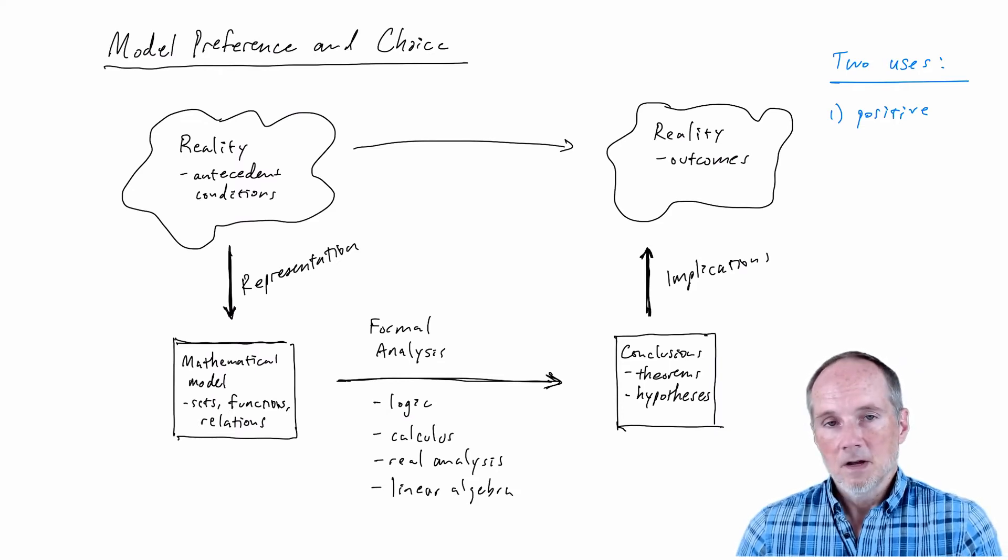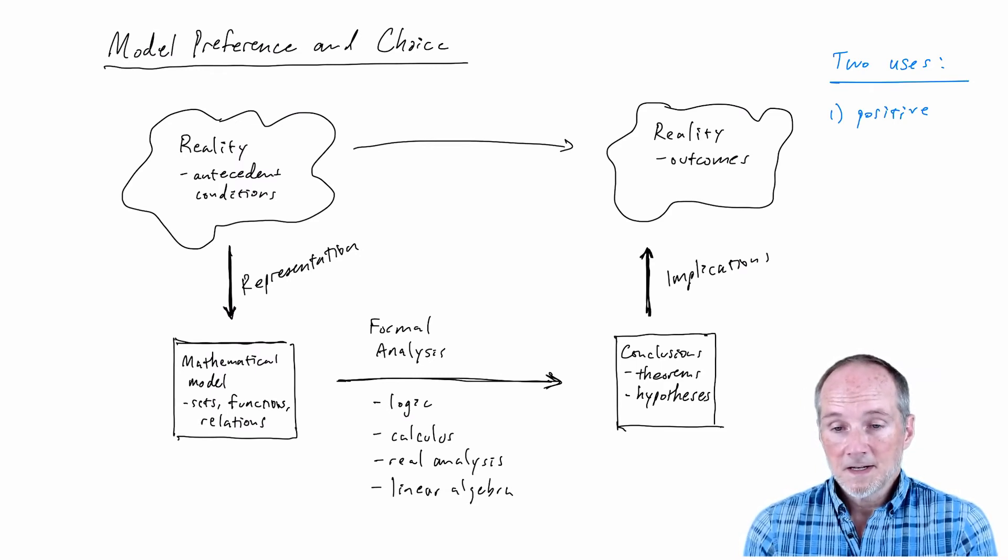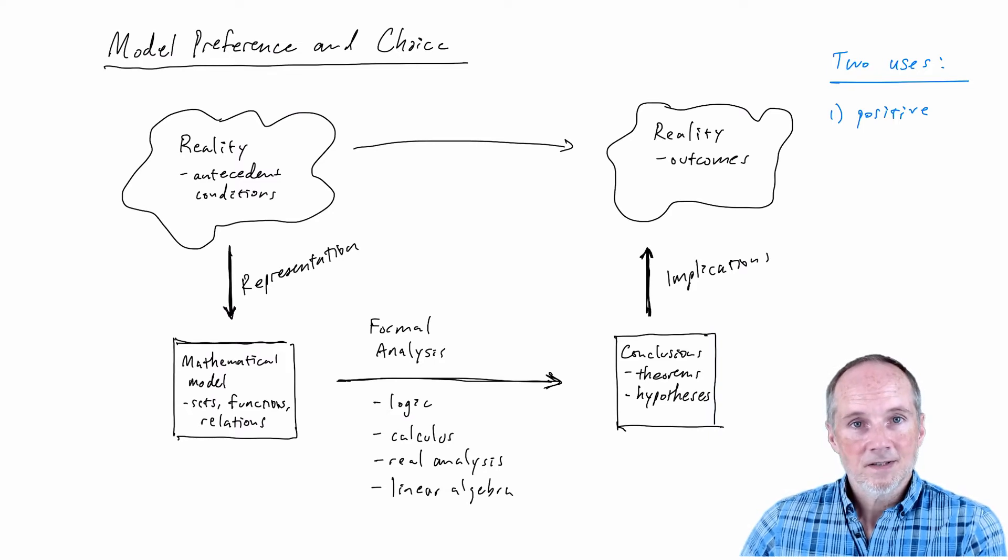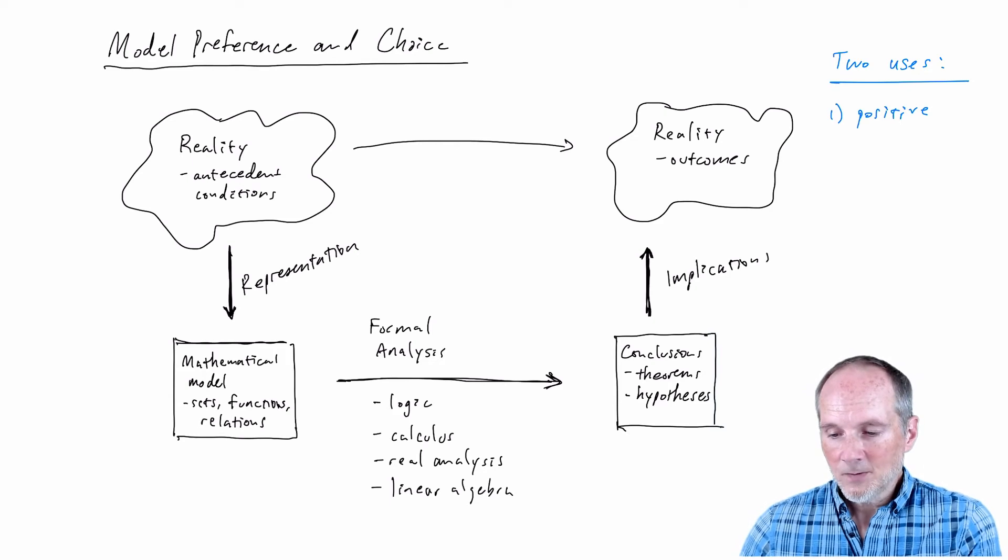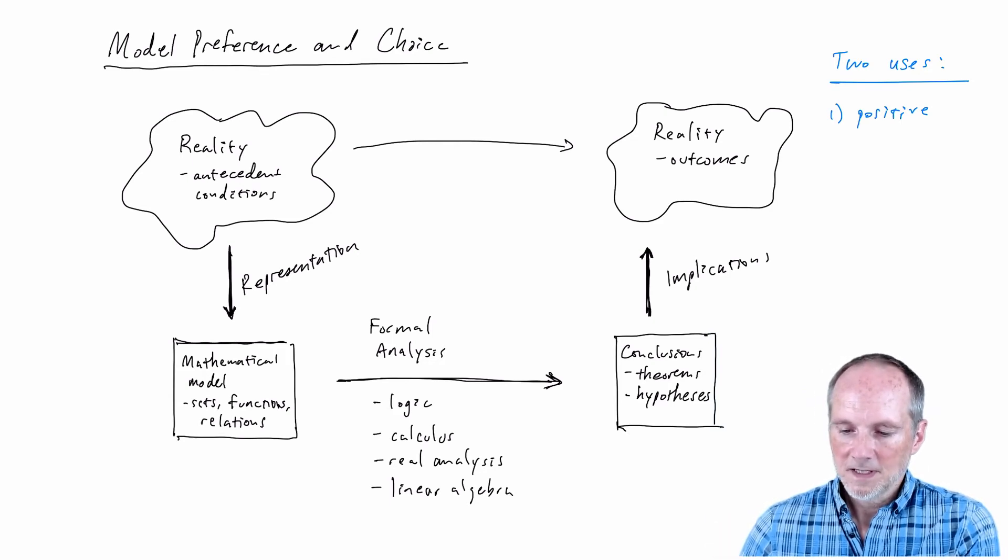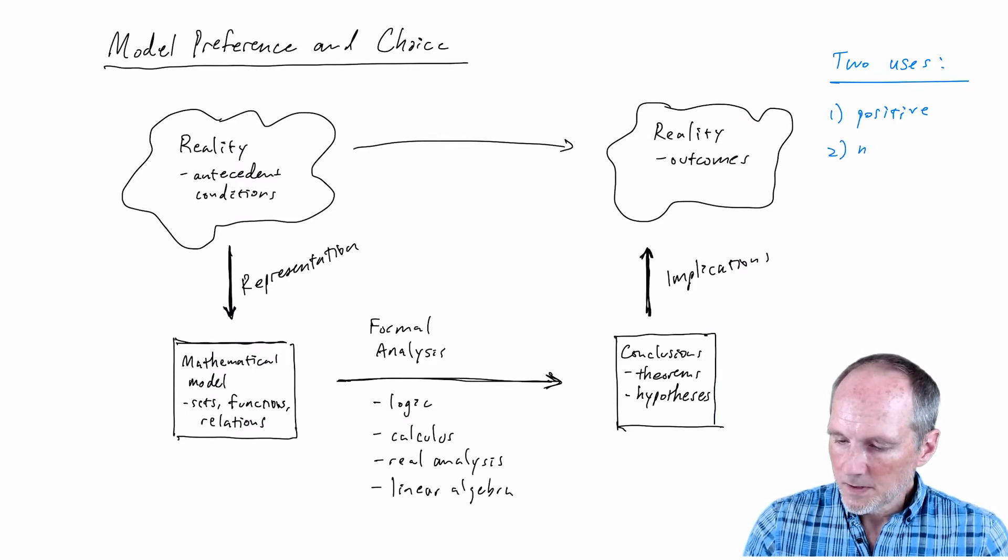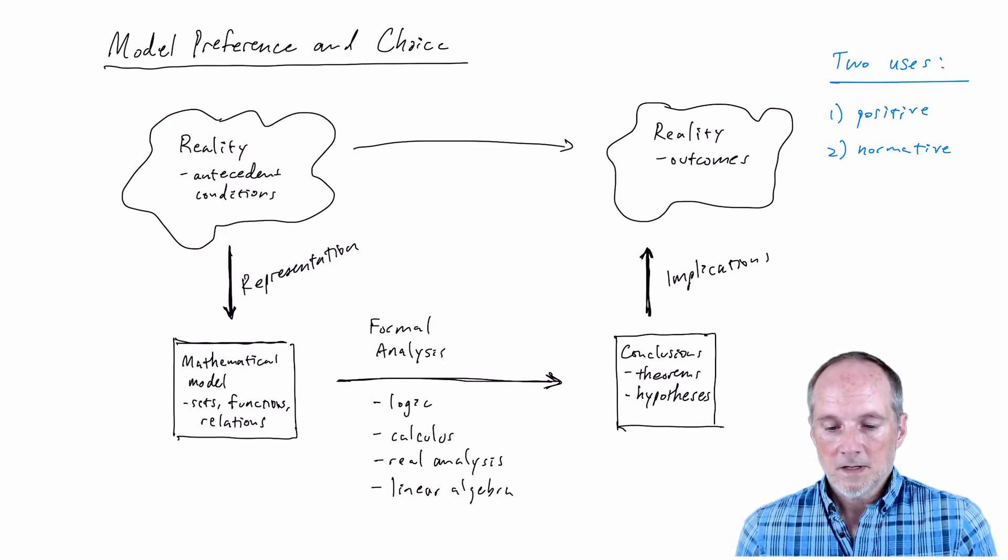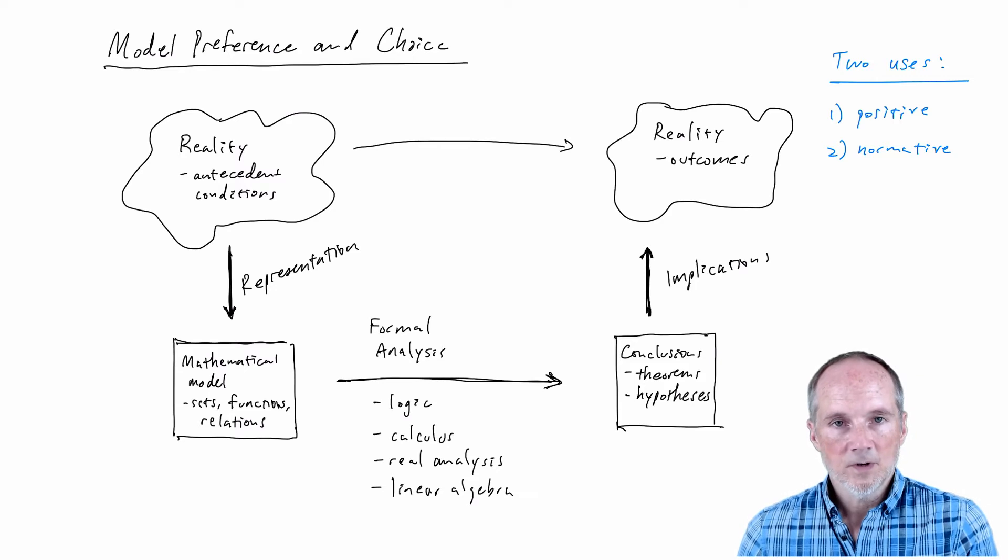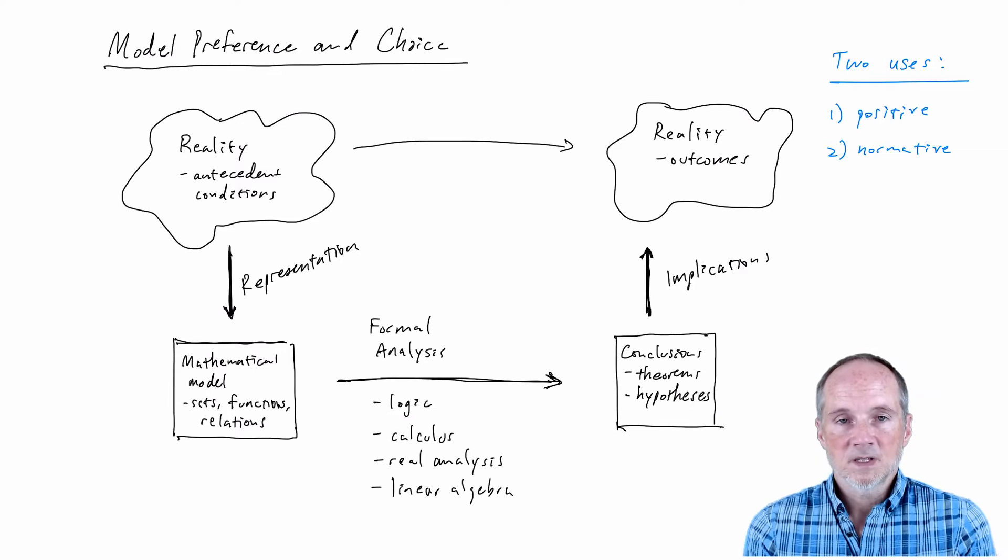The first use is probably what most people think about which is positive analysis which is essentially predictive so your model succeeds if it's able to generate predictions that are accurate possibly in a stochastic way but still it's telling us what will happen. The other use is normative. Normative analysis is telling us not what will happen but what should happen in some sense. So instead of being predictive it's prescriptive.